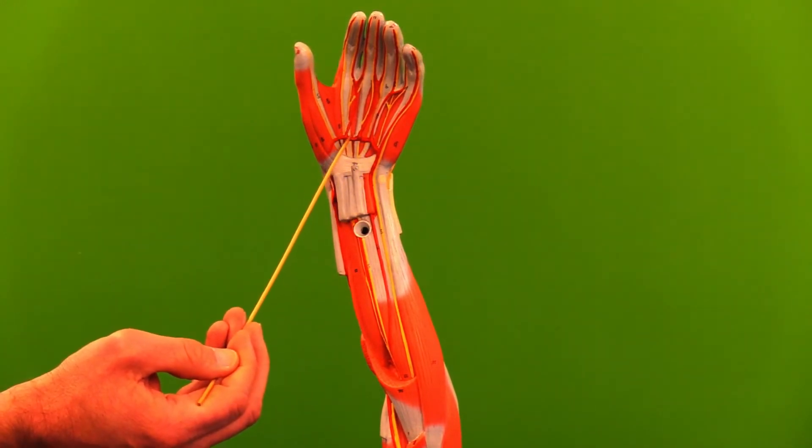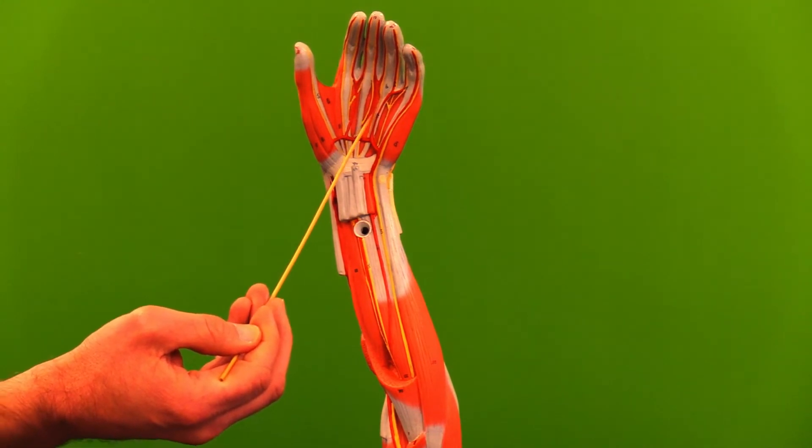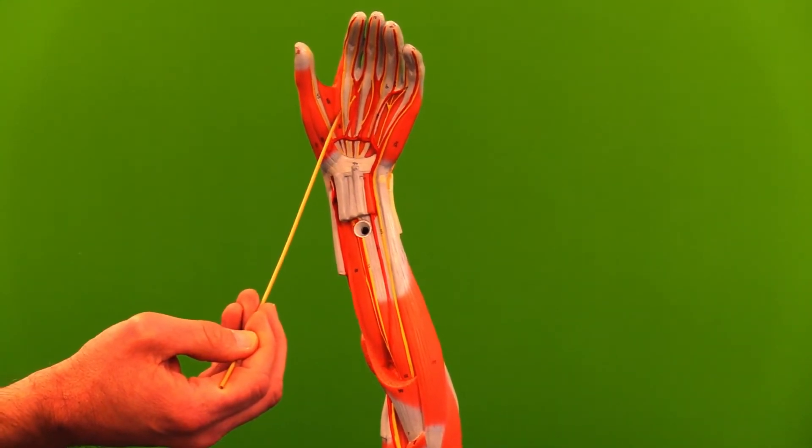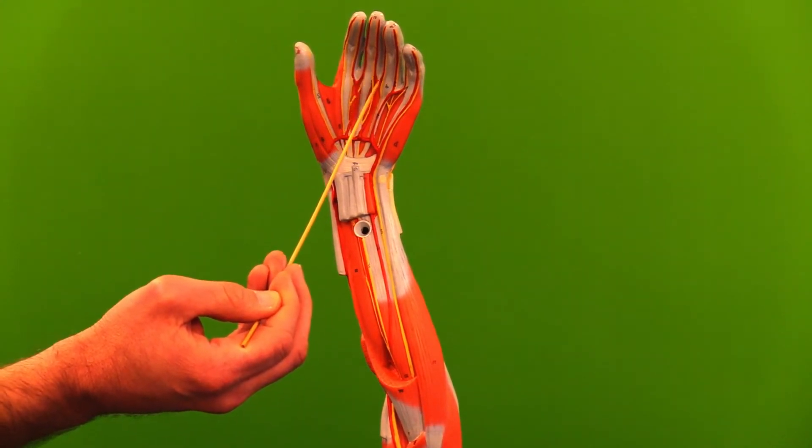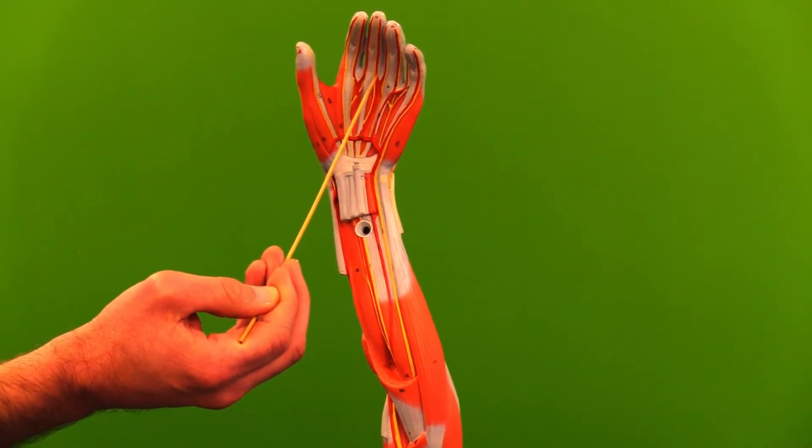Coming off of the palmar arch, we have our common palmar arteries, and then they branch into our proper palmar arteries.